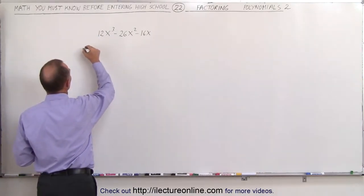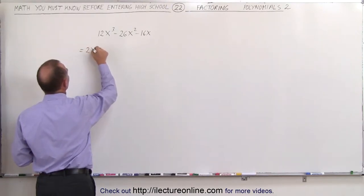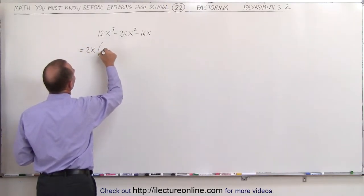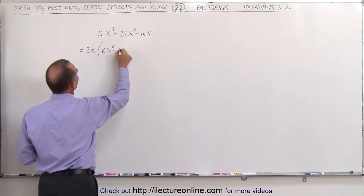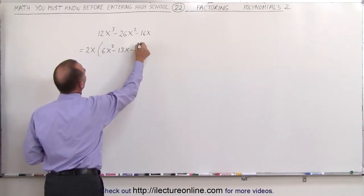So when we do that, we factor out a 2x, then we're left with 6x squared minus 13x minus 8.